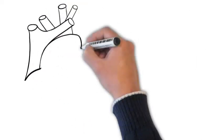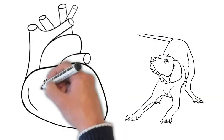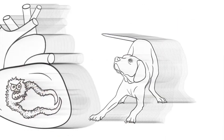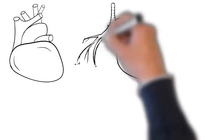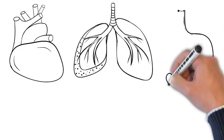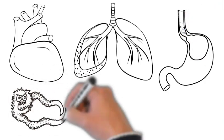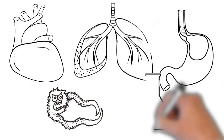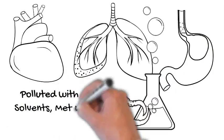Worms usually have preferred locations. The favorite organ for dirofilaria, dog heartworm, is the heart, even human heart. Sometimes the rules can be broken. My tests show dirofilaria can live in other organs too, if they are sufficiently polluted with solvents, metals, and other toxins.